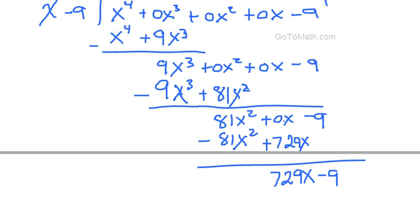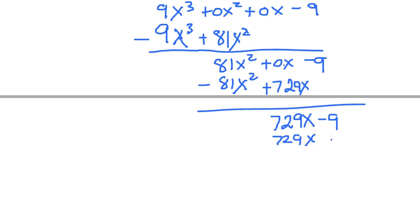So now we're going to have 729x. And then 729 times 9. Let me see, I'm doing this in my head. 6561. Hey, that's my phone number.